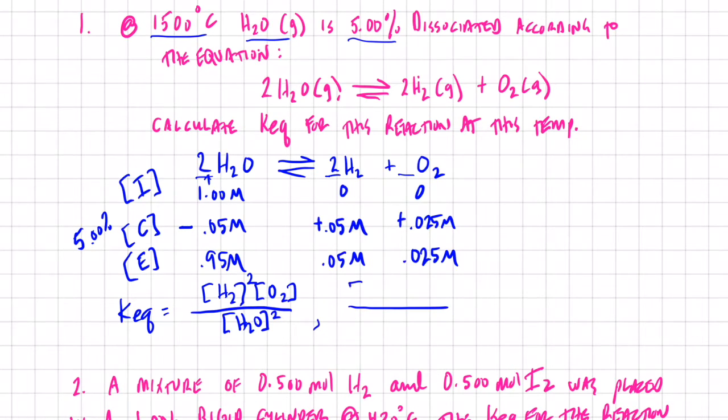We have hydrogen gas concentration of 0.05 molar squared, oxygen gas 0.025 moles per liter, and water vapor is 0.95 moles per liter squared.